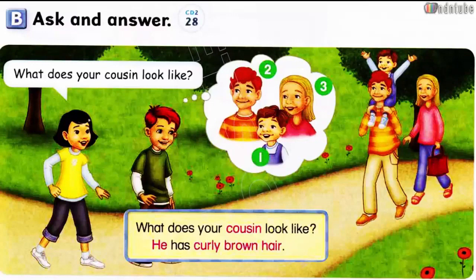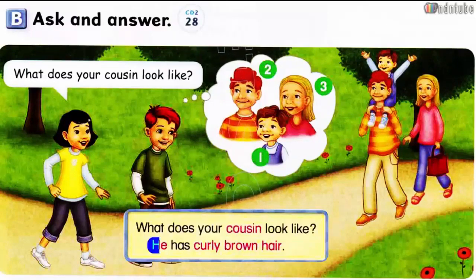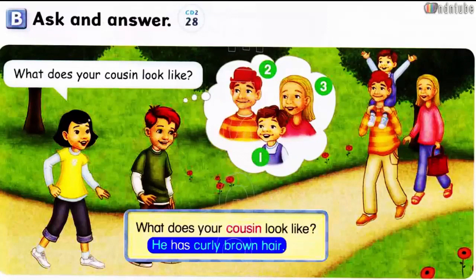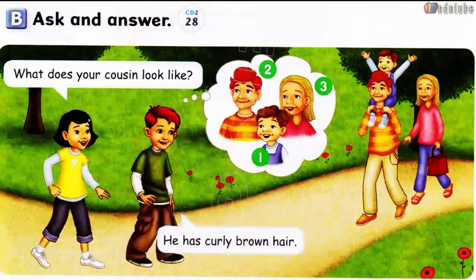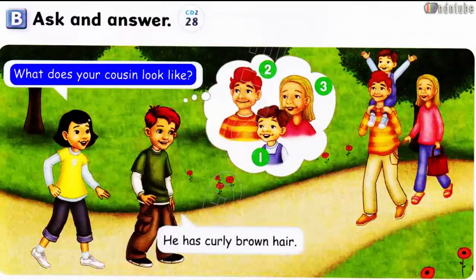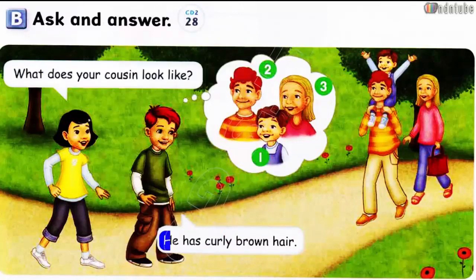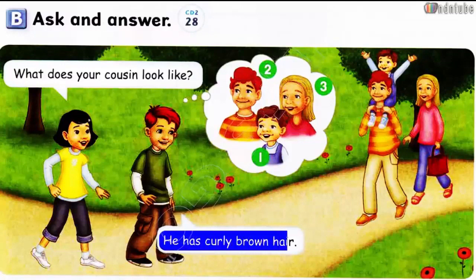Page 50. Drum track. What does your cousin look like? He has curly brown hair.